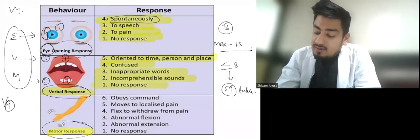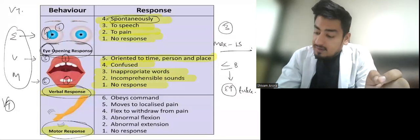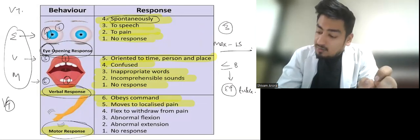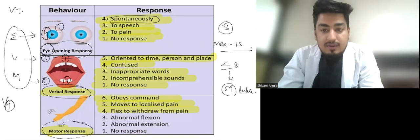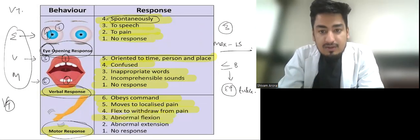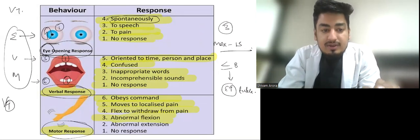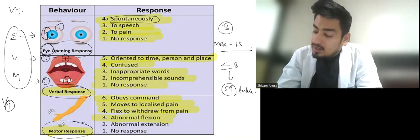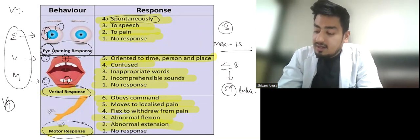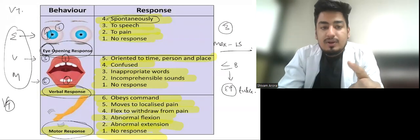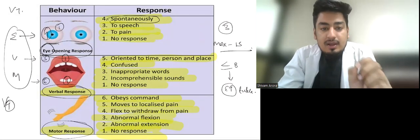In motor response we have six when the person obeys command. Five when the person moves to localized pain. Four when the person flexes to withdraw from pain. Three is abnormal flexion. Two is abnormal extension. And one is no response. So it is very important to remember this table.